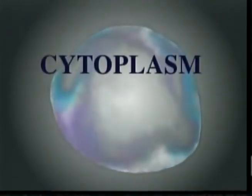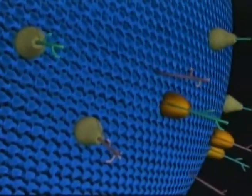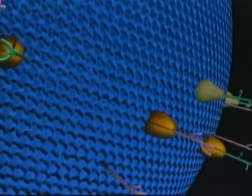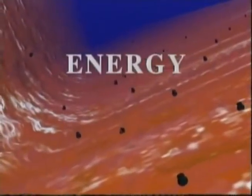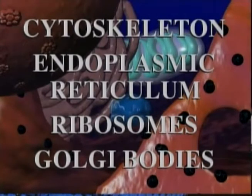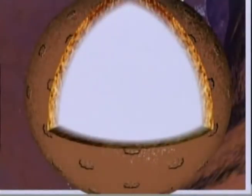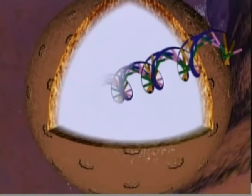An animal cell has three distinct sections: the membrane, the cytoplasm, and the nucleus. The cell membrane determines how a cell interacts with its environment and with other cells. There are three functions carried out in the cytoplasm: food is converted into energy, energy is stored for future use, and many substances are manufactured. The cell contains many organelles including the cytoskeleton, endoplasmic reticulum, ribosomes, Golgi bodies, vesicles, lysosomes, mitochondria, and the nucleus. From inside the nucleus, DNA directs the operations of the organelles and the reproduction of the cell.